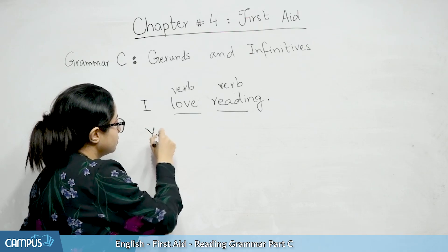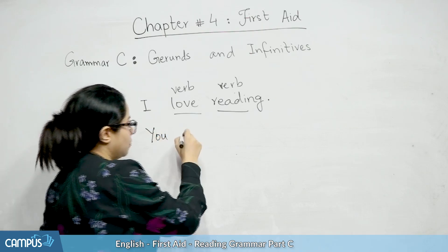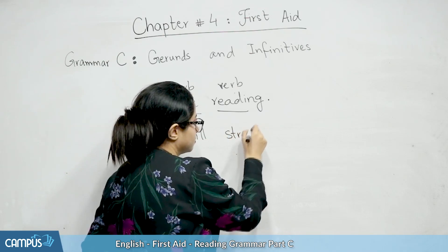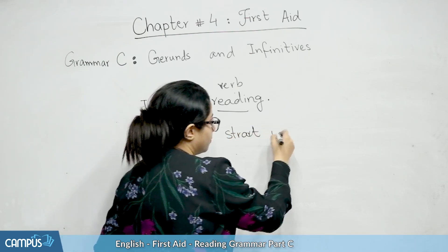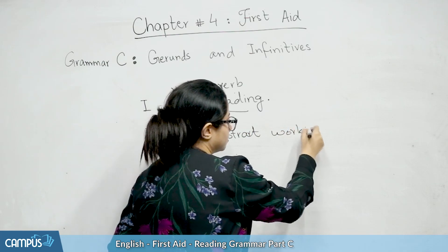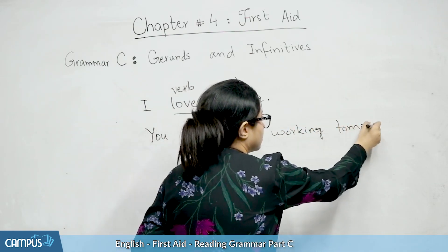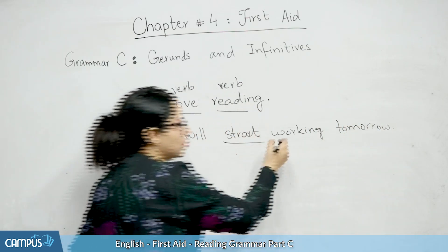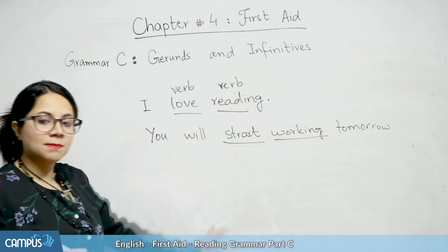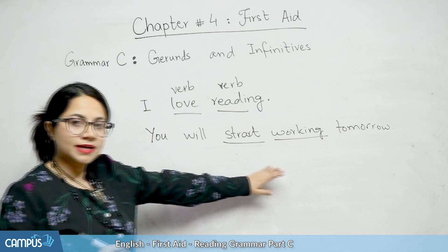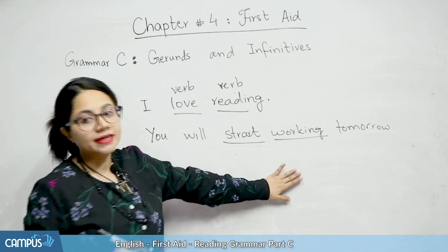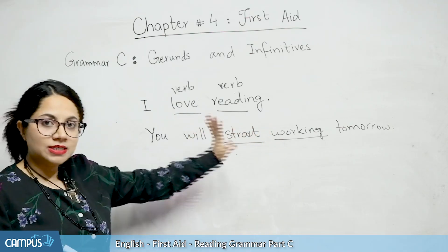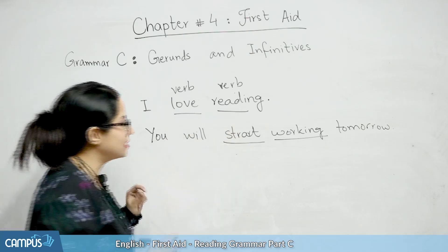You will start working tomorrow. Start is also a verb, working is also a verb. So in this case, the first verb stays the same and the next verb takes the -ing form. That makes it a gerund. Very simple.